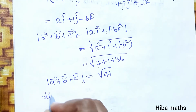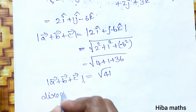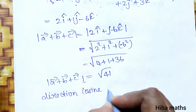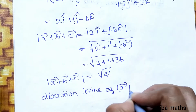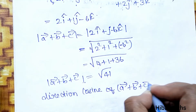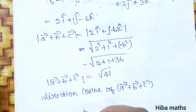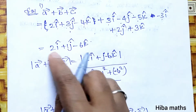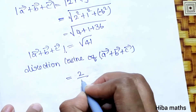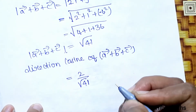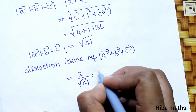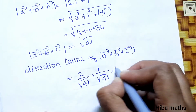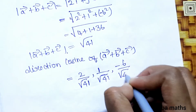Direction cosines of vector a + vector b + vector c: the direction cosines are equal to 2/√41, 1/√41, and −6/√41.